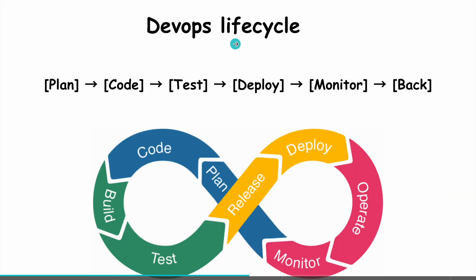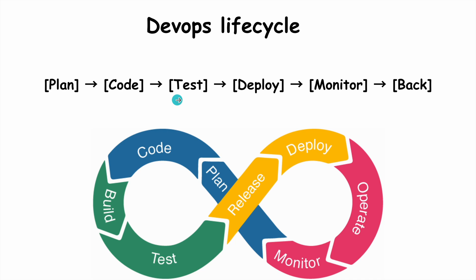Let's understand the DevOps lifecycle. It's usually shown as an infinite loop because the process keeps going in a continuous cycle. It starts with planning and coding the application. Then the code is built and tested to make sure it works properly. Next it is released and deployed for users to access. After that the application is running in production and the team monitors it to track performance and fix any issues. Finally the team uses what they have learned to plan the next update, and the cycle begins again.